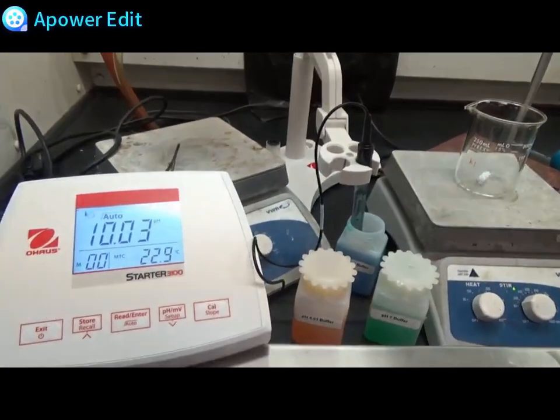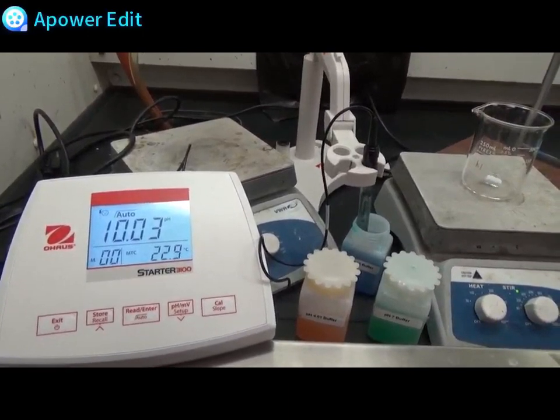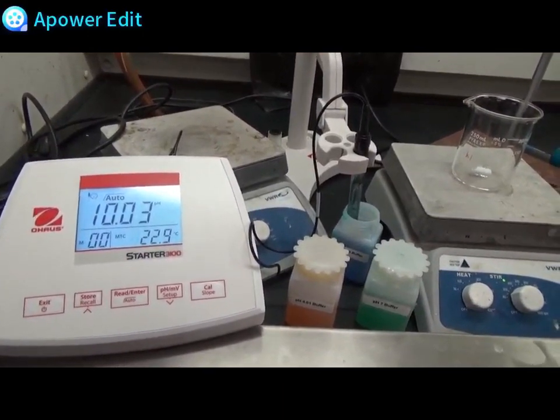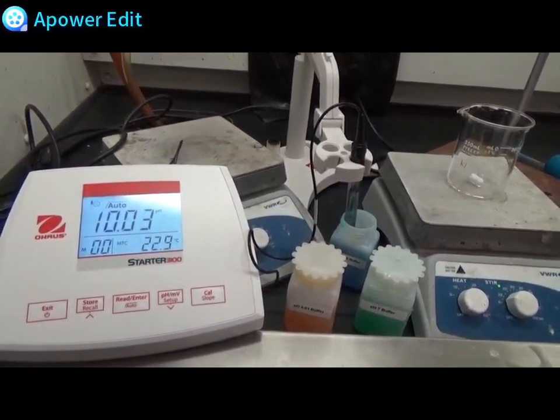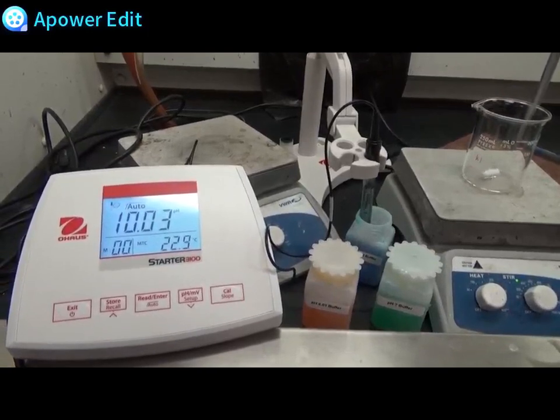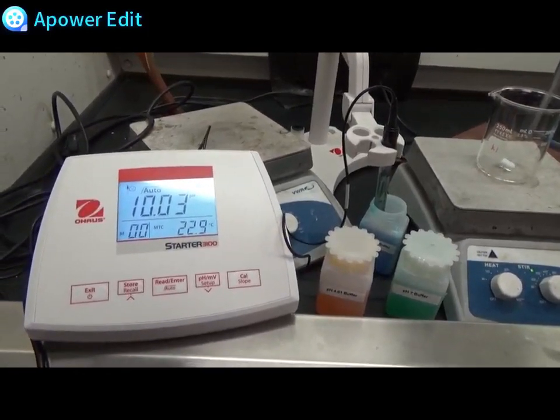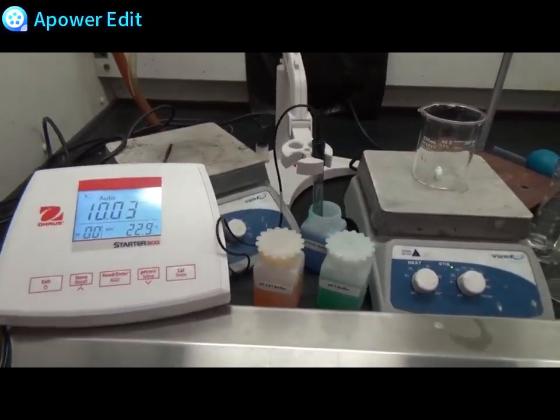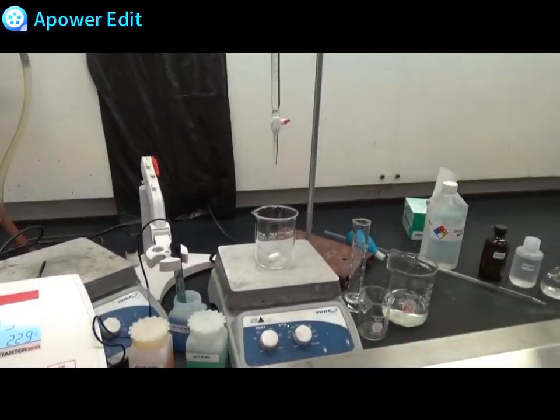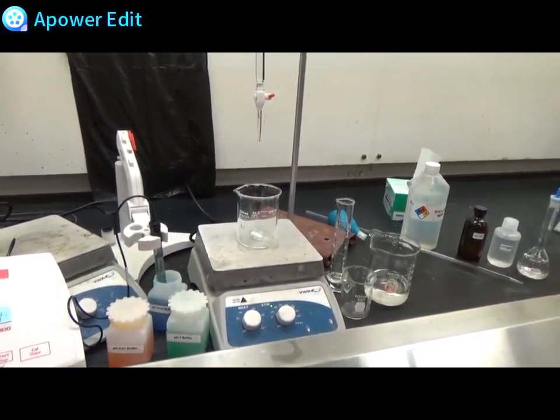This is the pH meter. I have already begun the calibration process. We have pH 4, pH 7, and pH 10 buffers. You will be given the buffers already made in the cart and they are colored for easy distinction. I will prepare the acidic solution so that we can begin the titration.